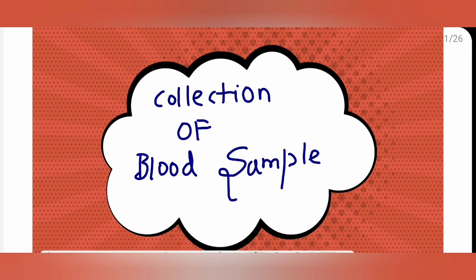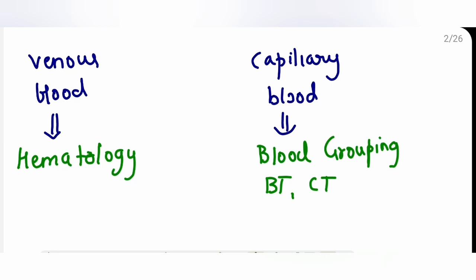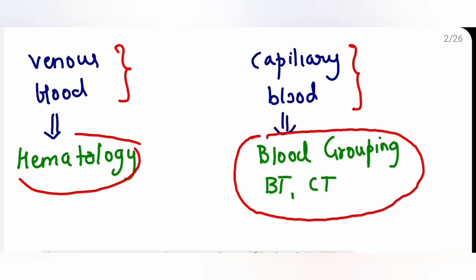Today's class is on collection of blood sample. Blood sample can be collected in one go. Last class we discussed two types: venous blood and capillary blood. Venous blood is collected mainly for hematological investigations. Capillary blood we use for blood grouping, bleeding time, clotting time.